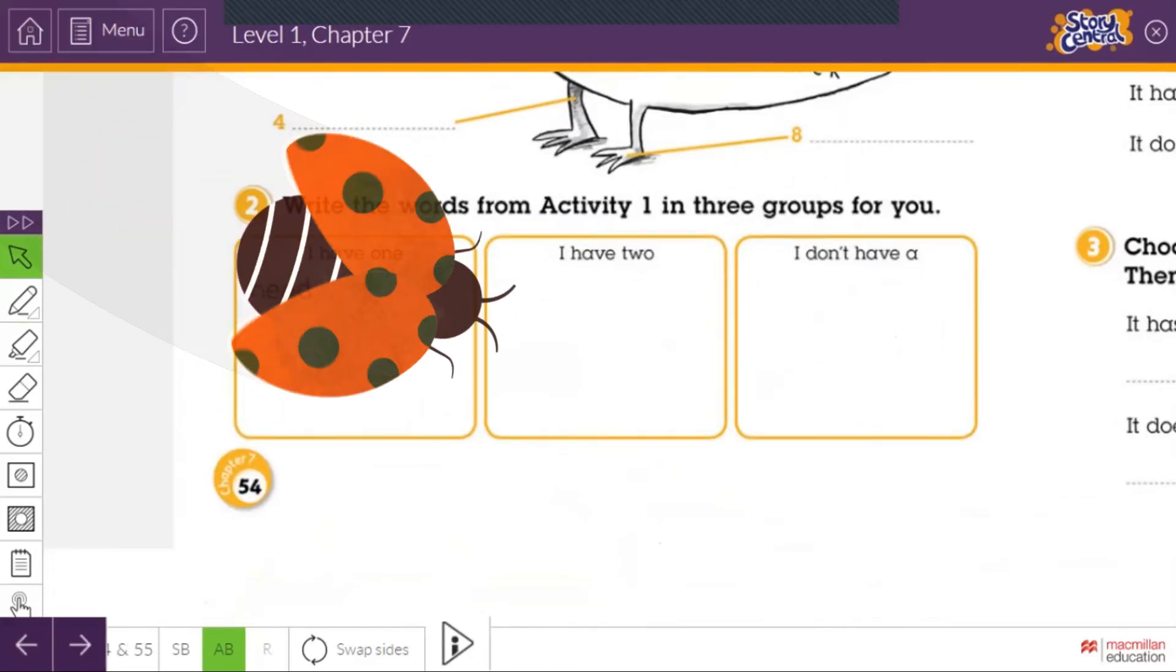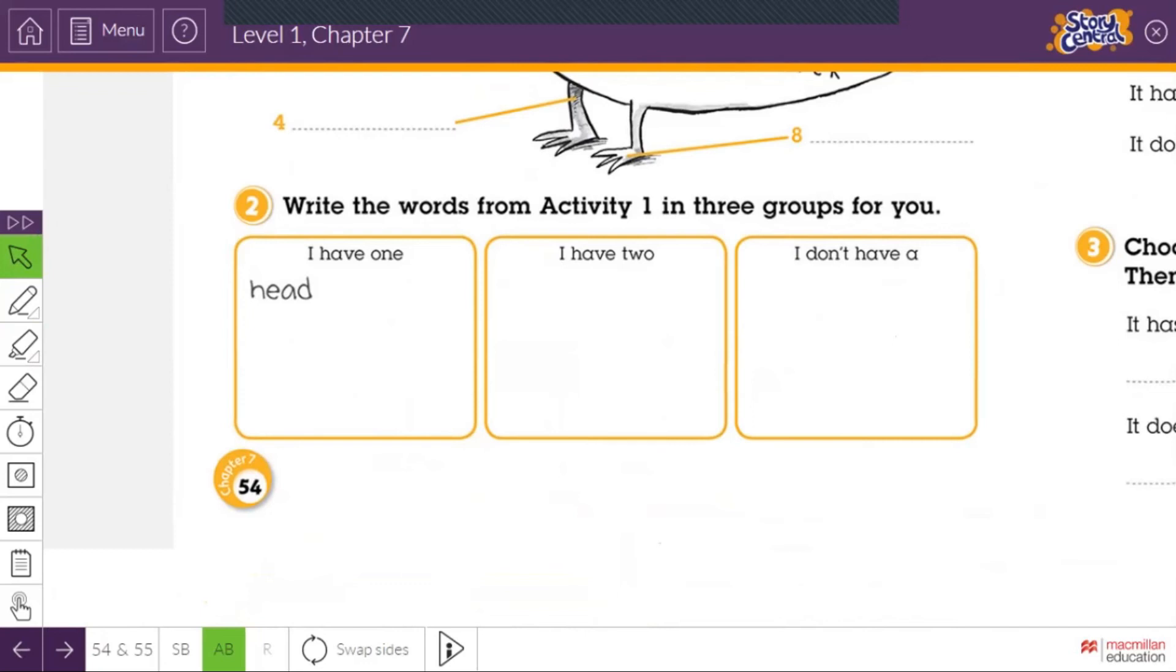Now let's move to activity two here. Write the words from activity one in three groups for you. In activity one, we learned about the dino. And number two here is about us. This is about us. What do you have and what you don't have? What you have and what you don't have. For example, one. What do you have? One. What do you have that's one? For example, head. Head here, because we as humans, we just have one head, right? We have one head only. So you can write in this column. And then I have two. What do you have two of? This is two. For example, here, arms.